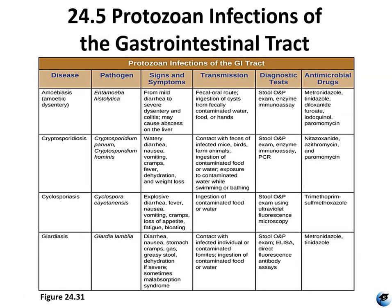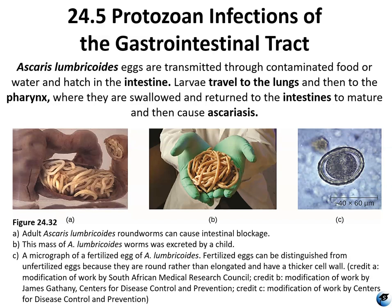This table outlines the characteristics of different protozoal infections of the gastrointestinal tract. Ascaris lumbricoides eggs are transmitted through contaminated food or water. The eggs are ingested and make it into the intestine where they hatch. The larvae travel all the way up into the lungs, end up in the pharynx where they are swallowed, and return to the intestines to mature.